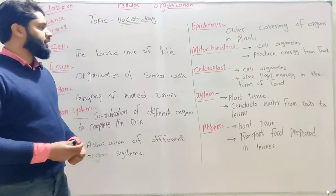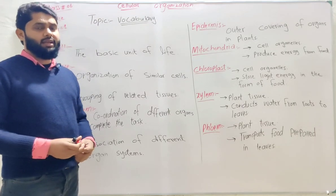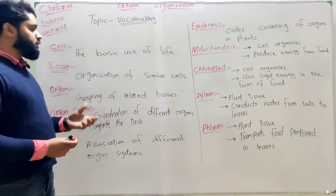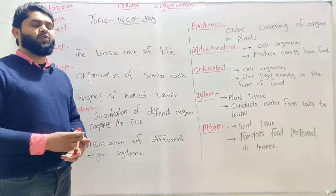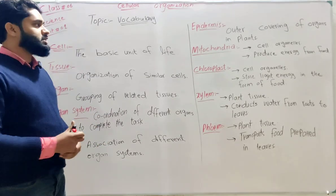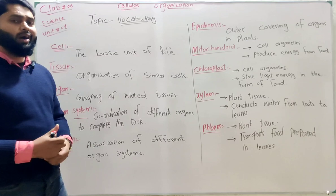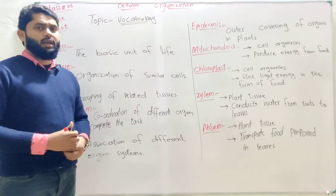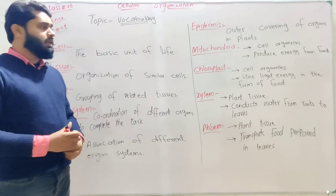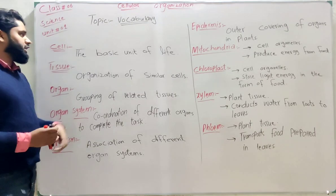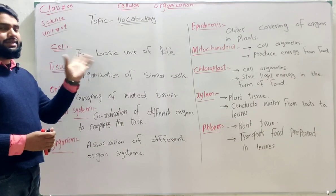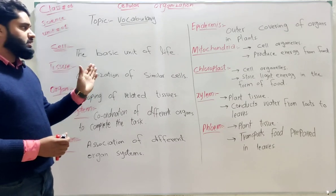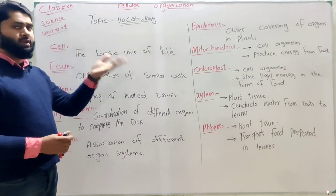Like this, an organism starts from a single cell. Cells combine to form tissue, tissue combines to form organ, organ combines to form organ system, and organ system combines to form an organism. In this whole process, life starts from a single cell. Due to this, the basic unit of life is called a cell. Cells have different functions and different types, which we discuss in this chapter.